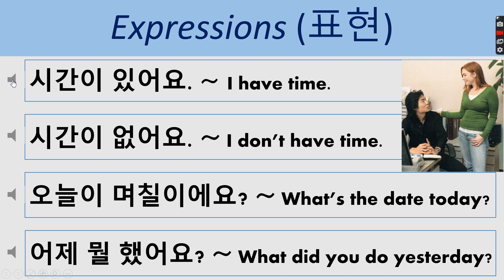When you say 'I have time,' you would say 시간이 있어요. 시간이 means 'I' — well, 시간 means time and 있어요 means 'have.' So 시간이 있어요 means I have time.